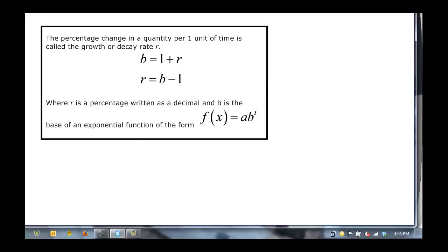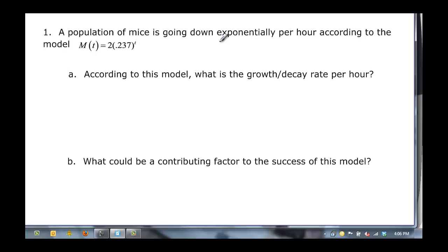So let's see how this works. A population of mice is going down exponentially per hour according to the model M(t) = 2(0.237)^t. We know it's going down because this base is between 0 and 1. We want to know what the decay rate would be per hour.